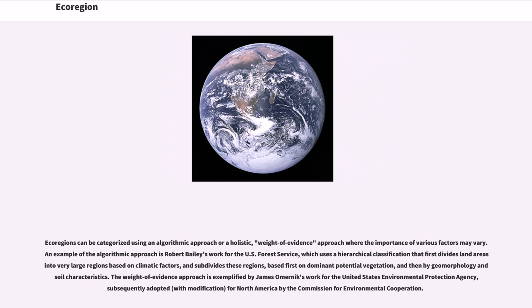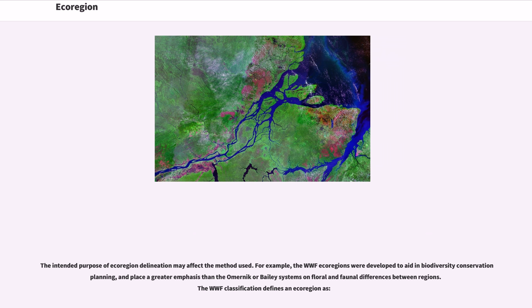The weight of evidence approach is exemplified by James Omernik's work for the United States Environmental Protection Agency, subsequently adopted for North America by the Commission for Environmental Cooperation. The intended purpose of ecoregion delineation may affect the method used. For example, the WWF ecoregions were developed to aid in biodiversity conservation planning and place a greater emphasis than the Omernik or Bailey systems on floral and faunal differences between regions.